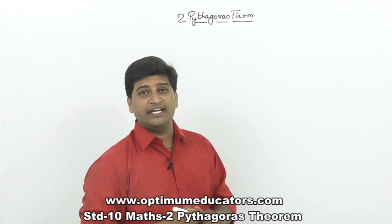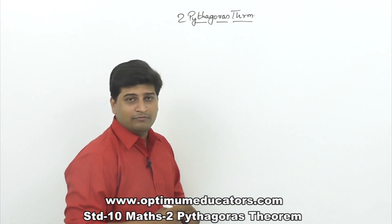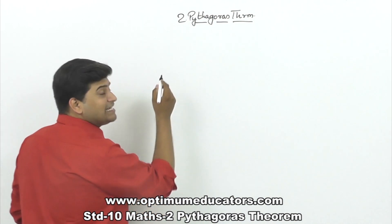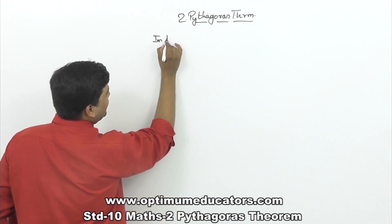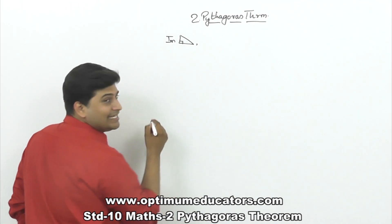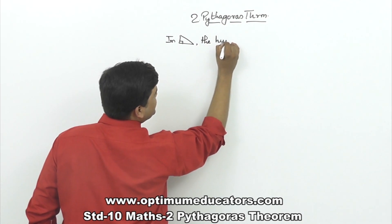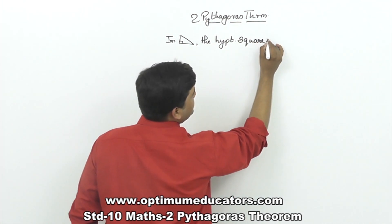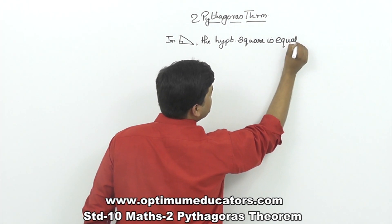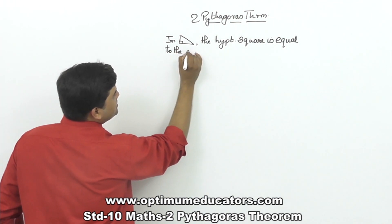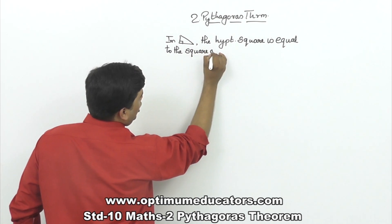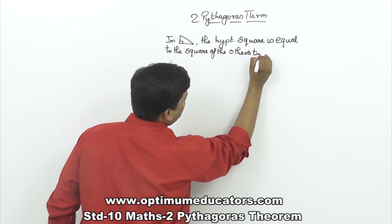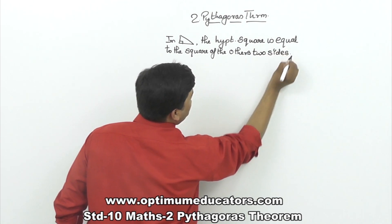So, let us quickly revise what we have studied in 9th standard. Before proceeding, let us quickly understand the statement of Pythagoras theorem. The statement says: in a right angle triangle, the hypotenuse square is equal to the squares of the other two sides.